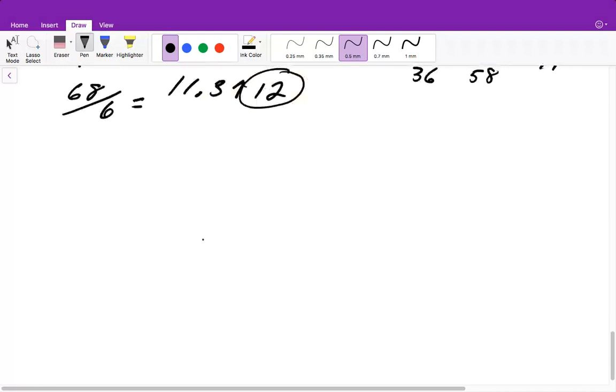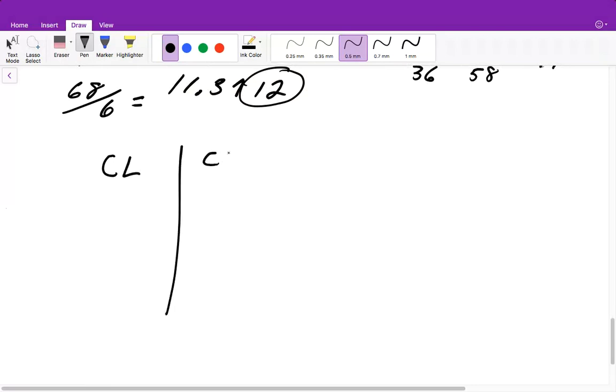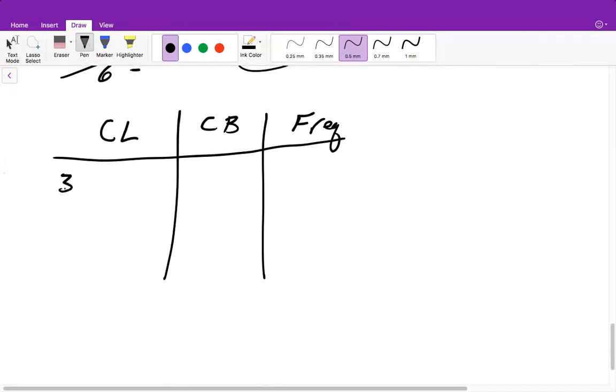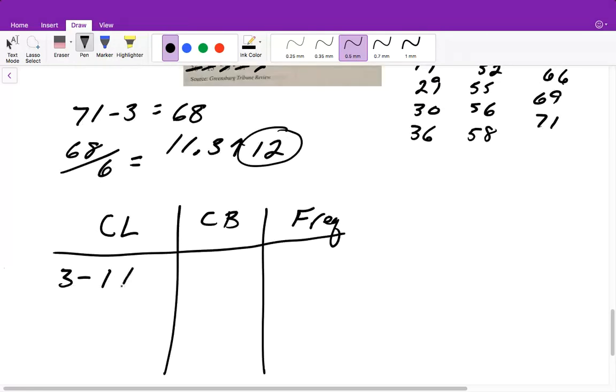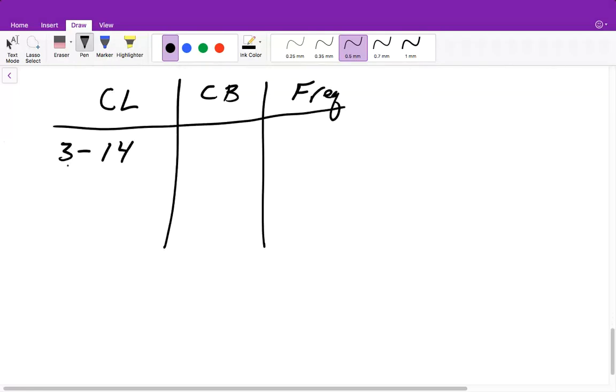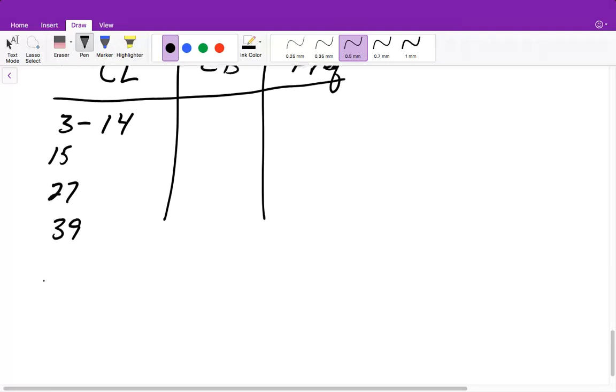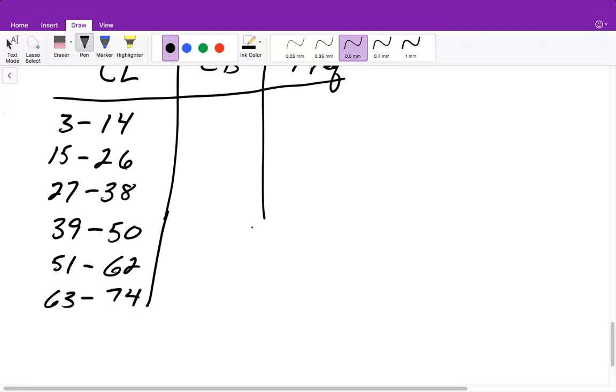All right, then we're going to create our chart, which has our class limits, our class boundaries, and our frequency. Well, our class limits, our smallest number is 3. So we start with 3. We will add 12 to that, so it's 15, and subtract one, so it's 14. Then each of these, we will add 12 to. So that will give me 15, 27; 39; 51; and 63. And the upper limits will be 26, 38, 50, 62, and 74.